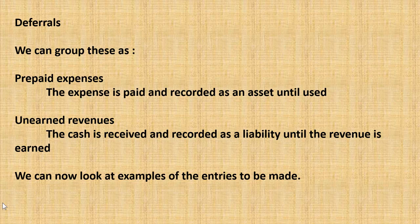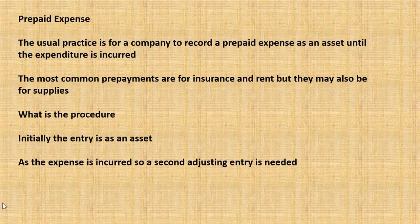Let's look at examples of how we would actually make the entries. Taking a prepaid expense: the usual practice is for a company to record the prepaid expense as an asset until the expenditure is actually incurred. This most commonly occurs for insurance and rent, but it could also be for supplies. The initial entry will be for the asset, and then as the expense is incurred we need a second entry — the adjusting entry.